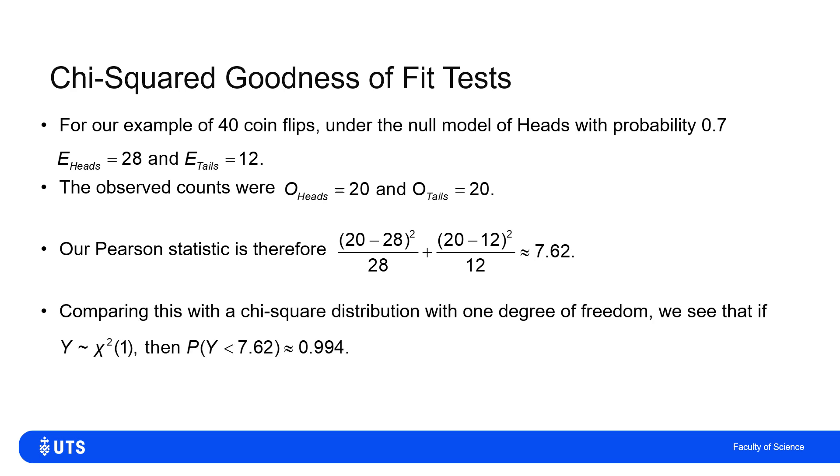But if I compare that on a quantile of the chi-squared with one degree of freedom, I find that that is the 99.4th percentile. So in other words, 99.4% of values in a chi-squared one are less than this 7.62. So even at a 5% level or a 1% level, I would not retain this null hypothesis. I'd reject it and say, I don't believe this is 70% chance of heads.